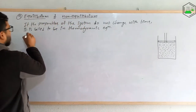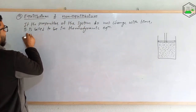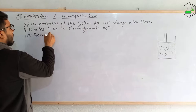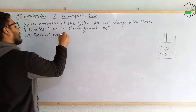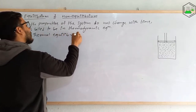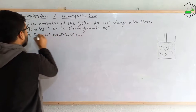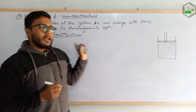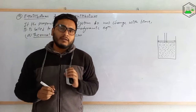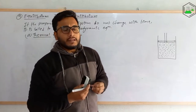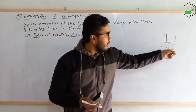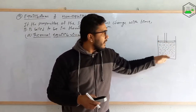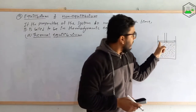The first criteria is thermal equilibrium. The system must have thermal equilibrium in order to be in thermodynamic equilibrium. Thermal equilibrium means the temperature in the system should remain the same at any point within the system.